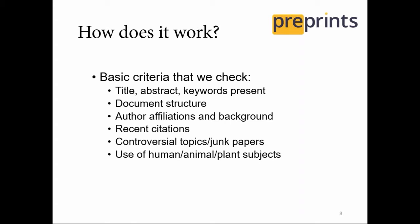The criteria we check with preprints are: first, does it look like a research article — has it got all the parts you would expect, the basic structure for a research article or review paper? We also look at author backgrounds — have they published in this area and been cited recently? This isn't something we'd straight out reject a preprint on, but if someone is a physicist suddenly publishing a paper about biology, we'd look at it in more detail. Recent citations indicate whether the preprint has embedded itself into current literature. We also do a read-through check for controversial topics and junk papers, and if it's using human, animal, or plant subjects, we check that basic ethical requirements are met.